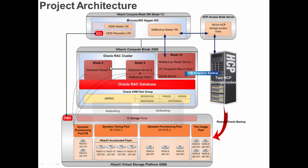The flow of this solution begins with taking a backup of the Oracle 12c RAC ASM database using HDID with a Hitachi thin image snapshot. Then, using HDID, the Hitachi thin image snapshot is mounted on Blade 10 — the mount host — which is also a NetBackup media server and an Oracle server. Afterwards, the Oracle database snapshot mount is backed up to Hitachi Content Platform using Veritas NetBackup.